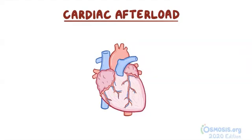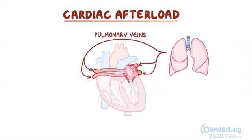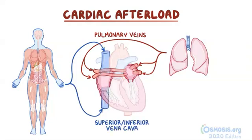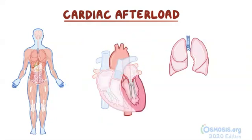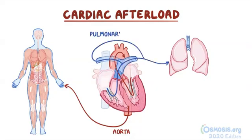The heart has two upper chambers: the left atrium, which receives oxygenated blood from the lungs via the pulmonary veins, and the right atrium, which receives deoxygenated blood from all of our organs and tissues via the superior and inferior vena cava. From the atria, blood flows into the lower chambers — the left ventricle, which pumps oxygenated blood to all our organs and tissues via the aorta, and the right ventricle, which pumps deoxygenated blood back to the lungs via the pulmonary arteries.